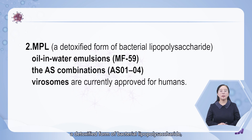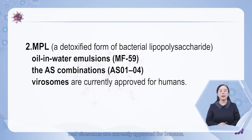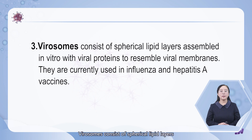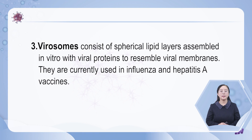MPL, a detoxified form of bacterial lipopolysaccharide, oil-in-water emulsions, AS01, AS04, and virosomes are currently approved for humans. Virosomes consist of spherical lipid layers assembling in vitro with viral proteins to resemble viral membranes. They are currently used in influenza and hepatitis A vaccines.